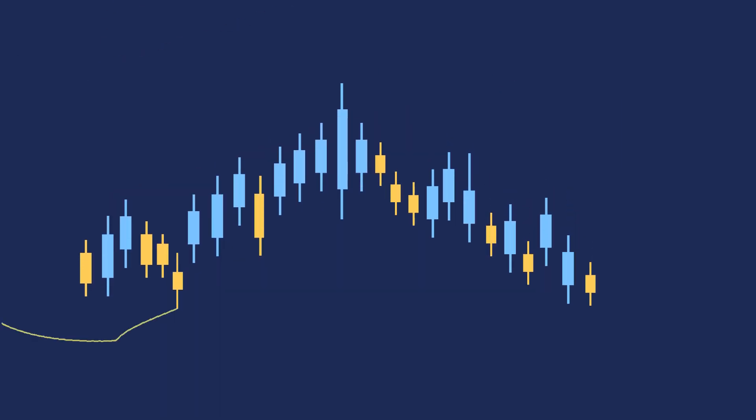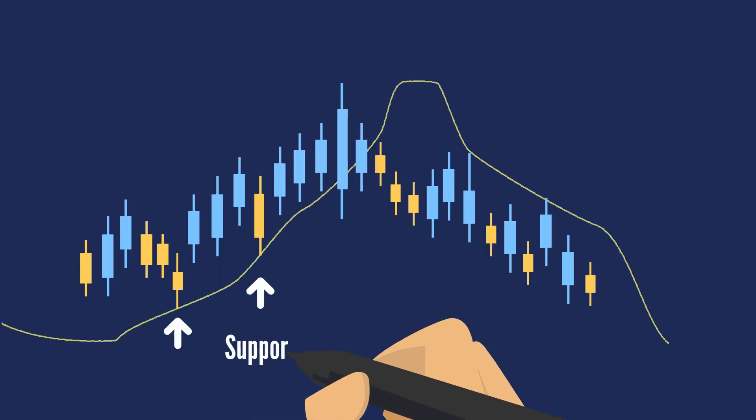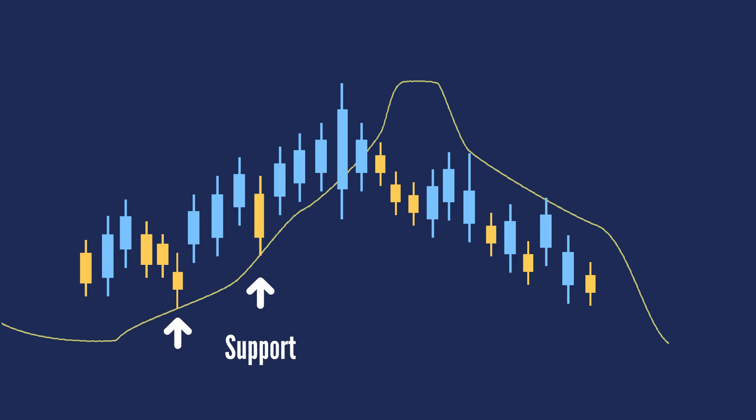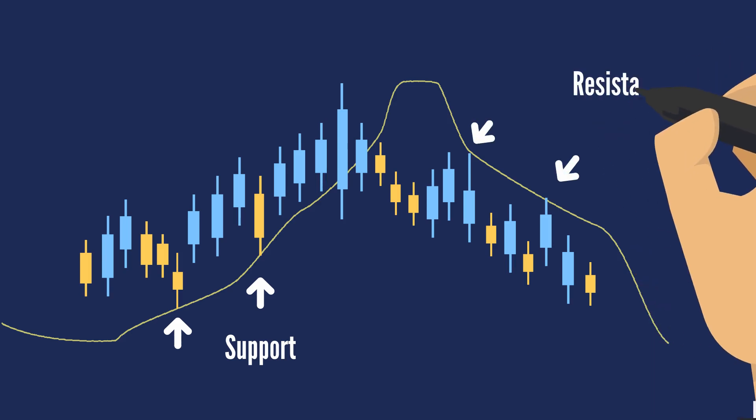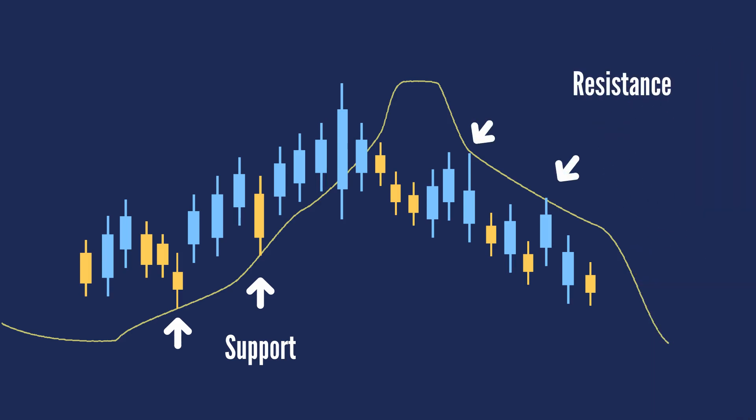In financial terms, moving average levels can be interpreted as support in a falling market, or resistance in a rising market.